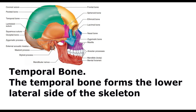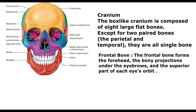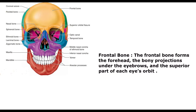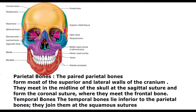Cranium. The box-like cranium is composed of eight large flat bones. Except for two paired bones — the parietal and temporal — they are all single bones. Frontal bone: the frontal bone forms the forehead, the bony projections under the eyebrows, and the superior part of each eye's orbit. Parietal bones: the paired parietal bones form most of the superior and lateral walls of the cranium. They meet in the midline of the skull at the sagittal suture and form the coronal suture where they meet the frontal bone. Temporal bones lie inferior to the parietal bones; they join them at the squamous sutures.